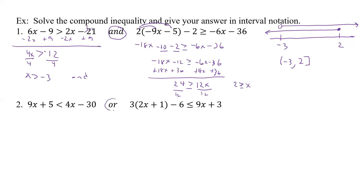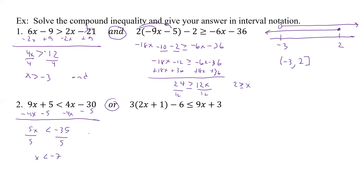All right, now we're going to do an 'or', which means we're going to have all of it. In this case, if this one had been an 'or', that would be the whole number line. But we didn't have a whole number line because we had 'and'. Now let's subtract 4x but let's also subtract 5. 9 minus 4 is 5x less than. Those cancel and we have minus 30 minus 5 more — it's minus 35. Divided by 5, x is less than negative 7.